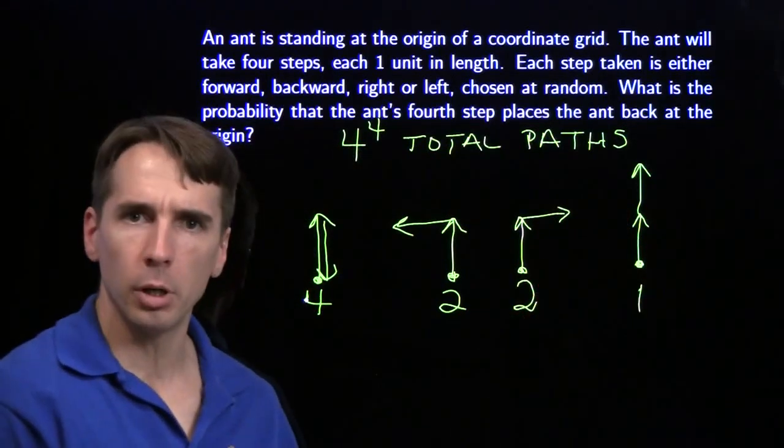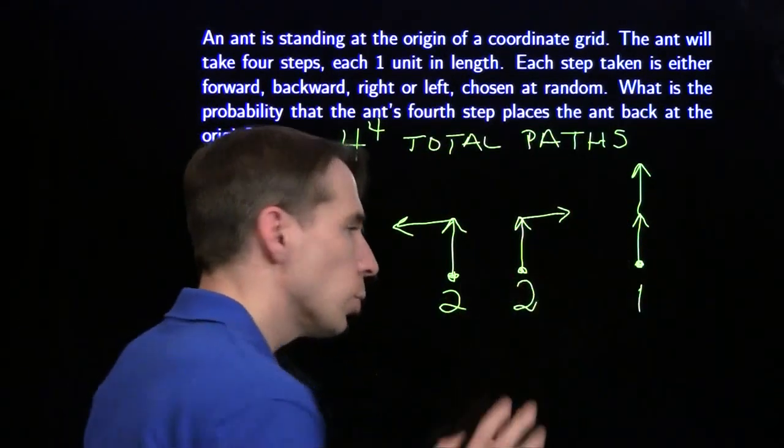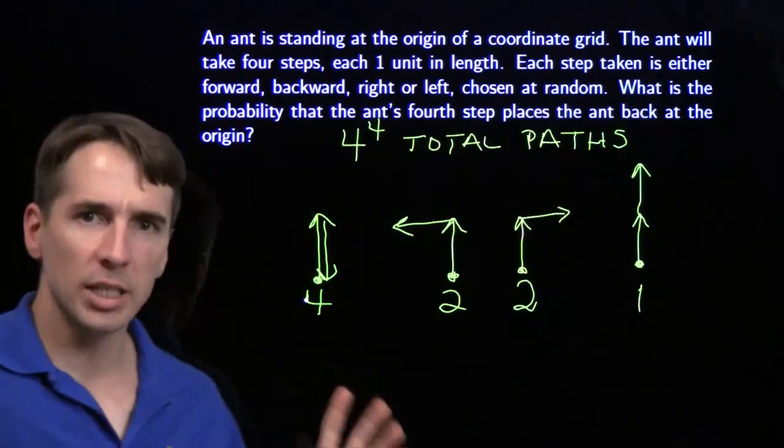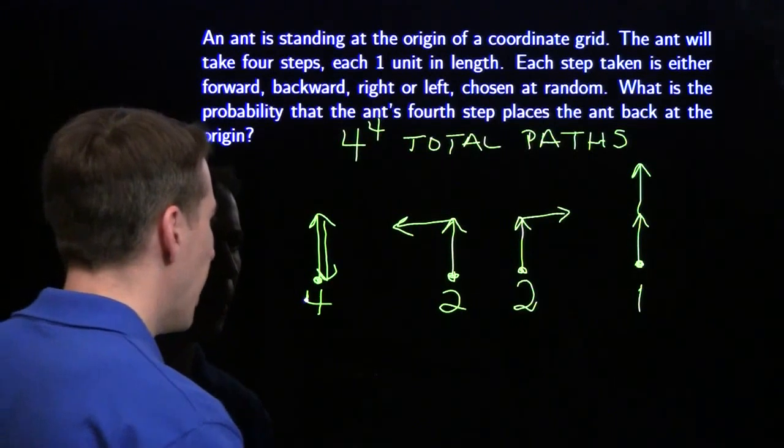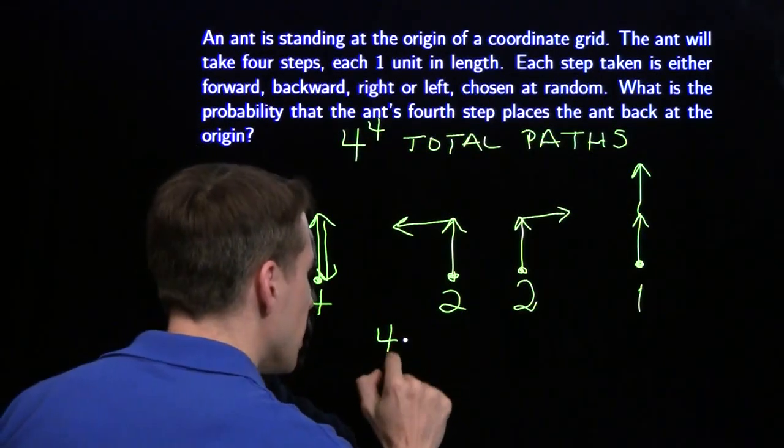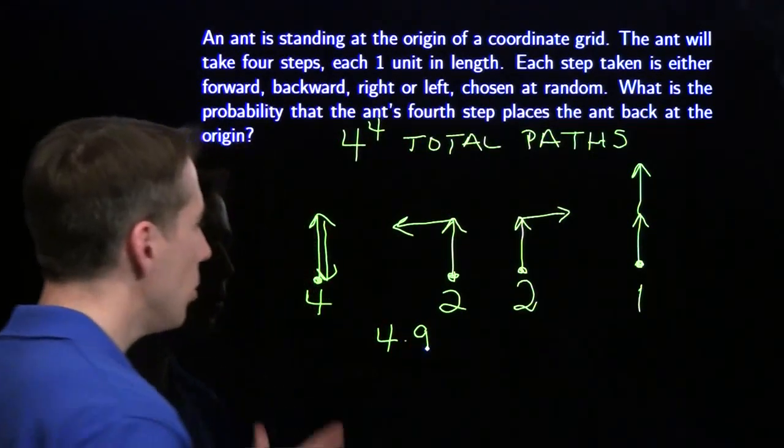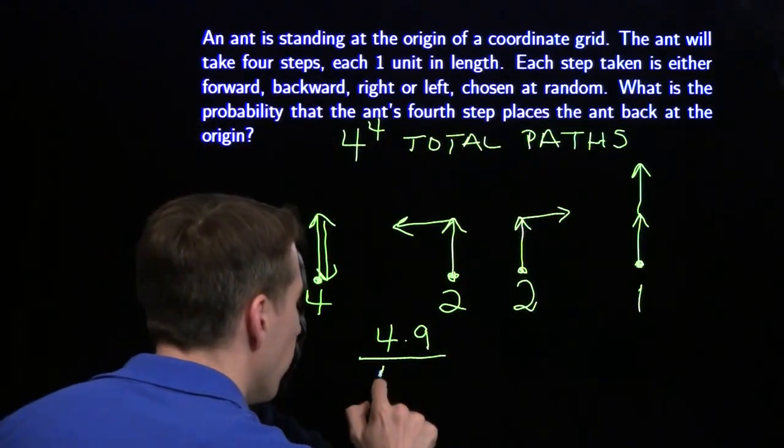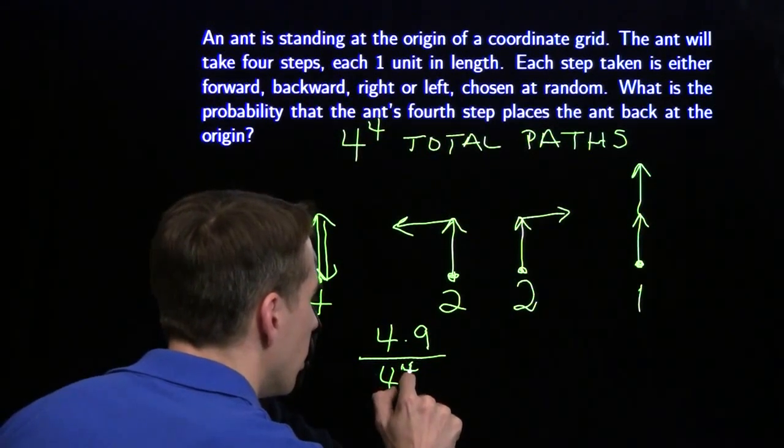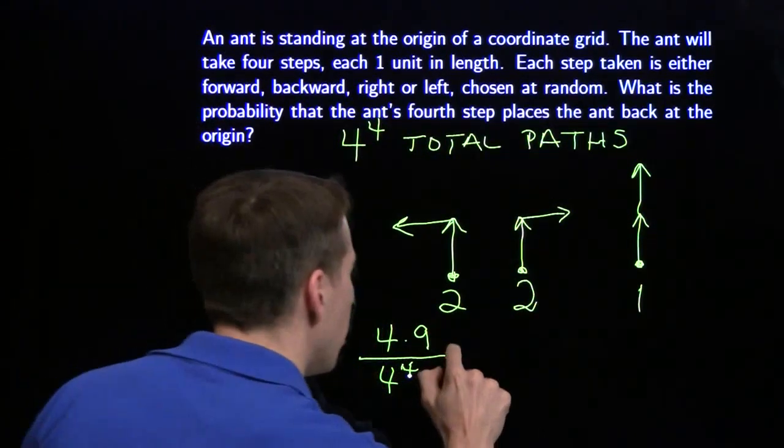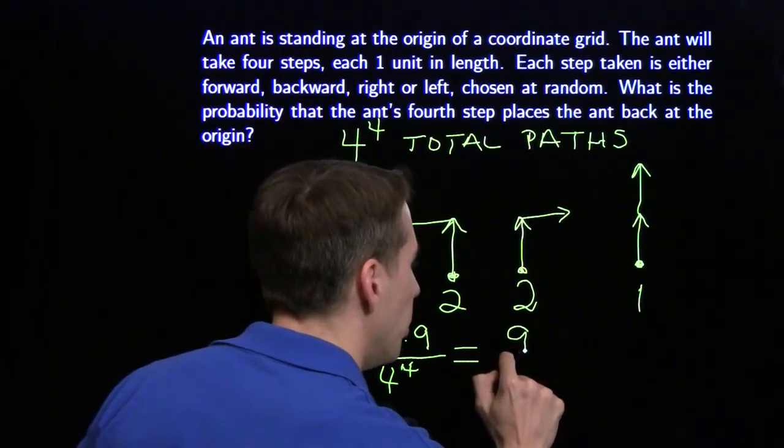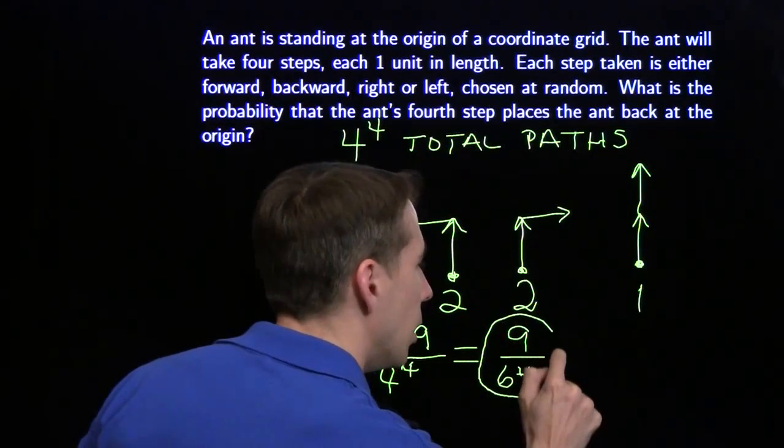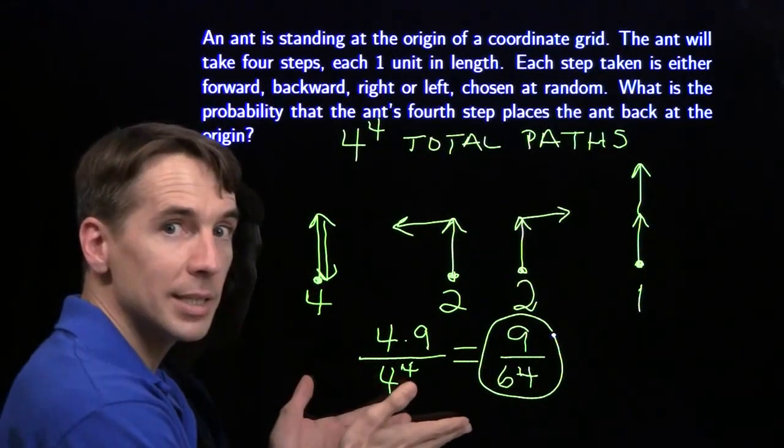So if the ant starts off going forward, there's four plus two plus two plus one. There's nine ways to get back home. We have basically the same situation if the ant starts off right, left, or down. In any of those cases, we have nine ways to get back home. So for each of the four first steps, there are nine ways to get back home. So there's four times nine is 36 ways to get back home out of our four to the fourth total paths. Cancel out of four. We have nine over four cubed, which gives us a probability of nine over 64. And we tackled that problem one step at a time.